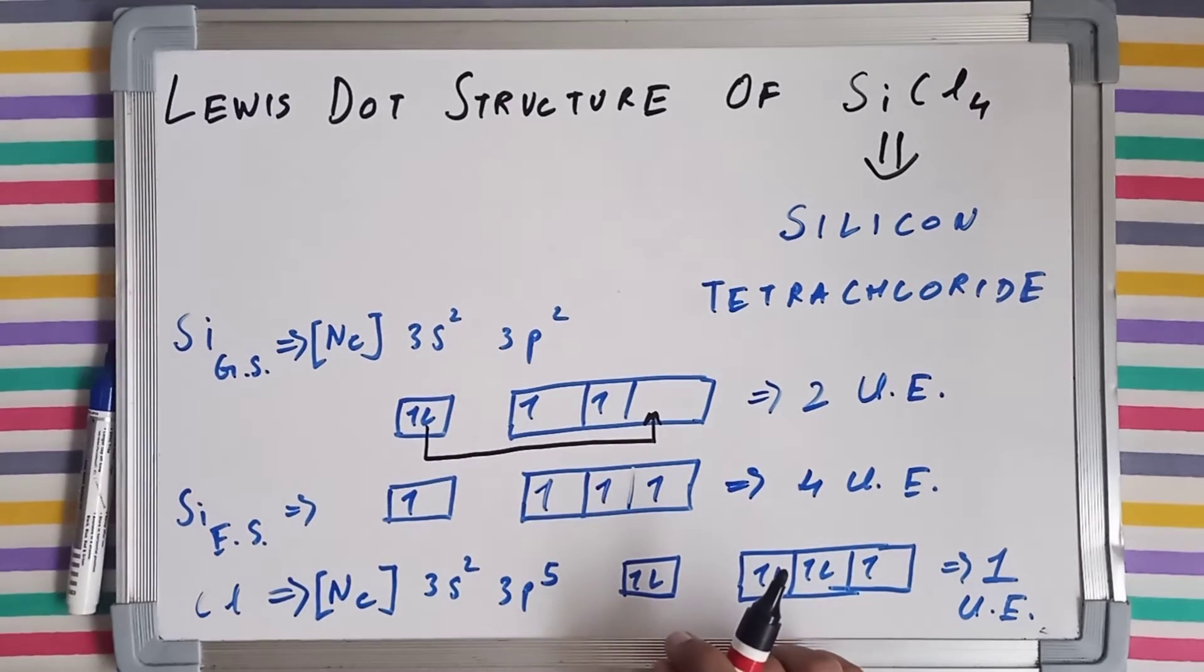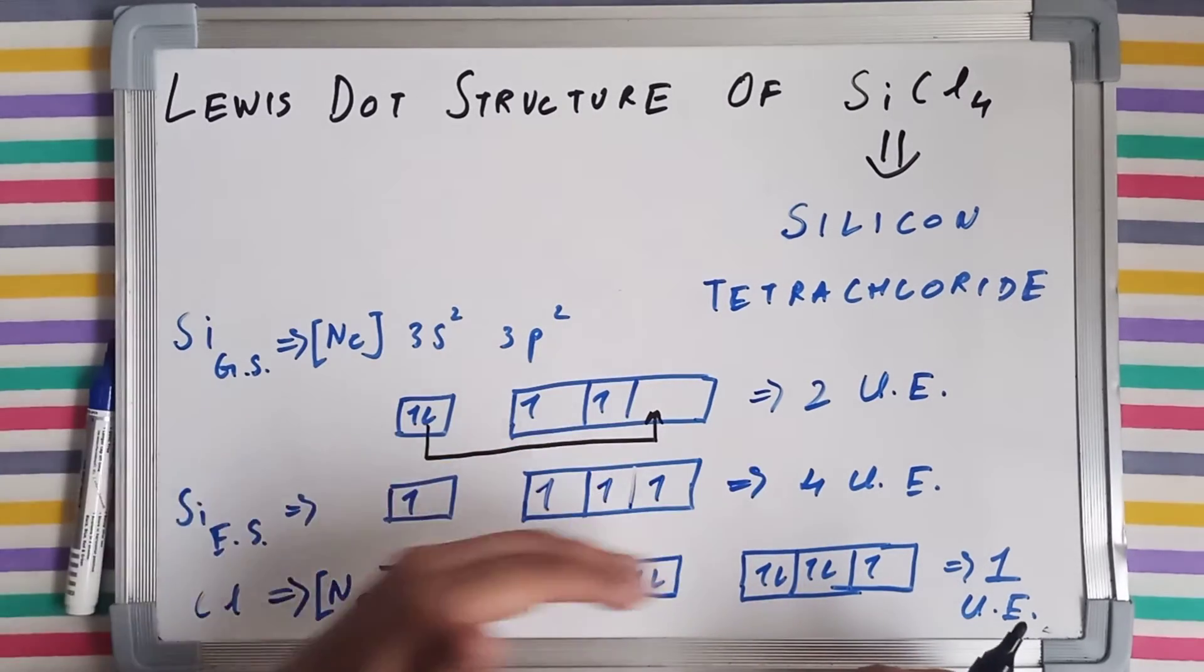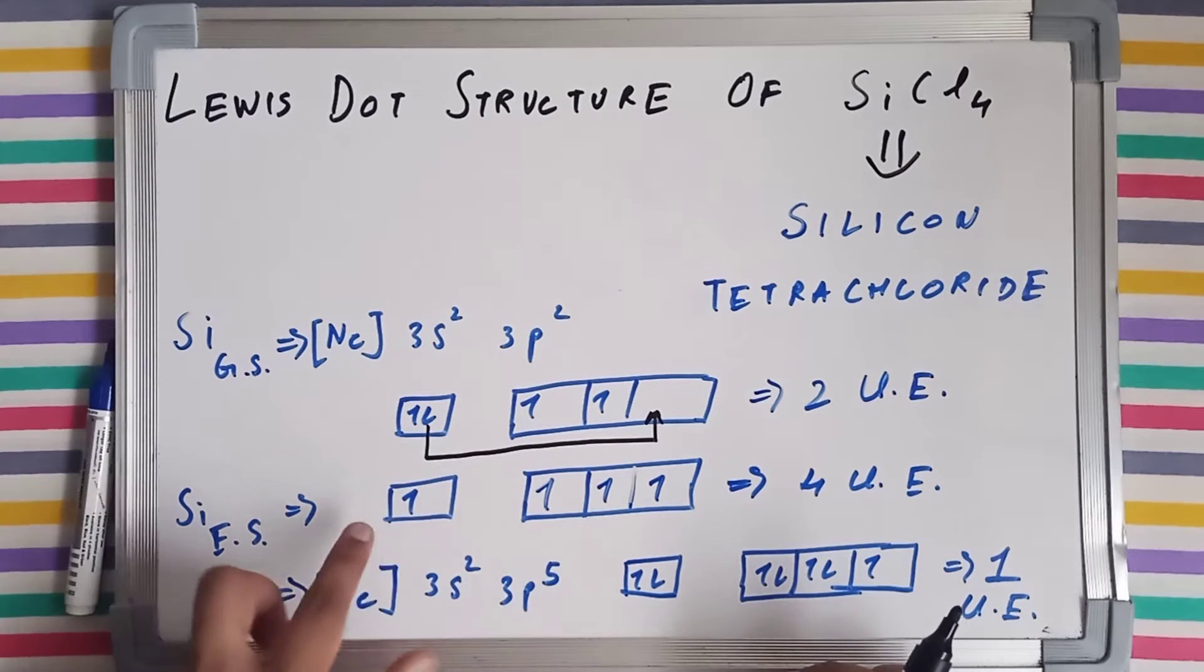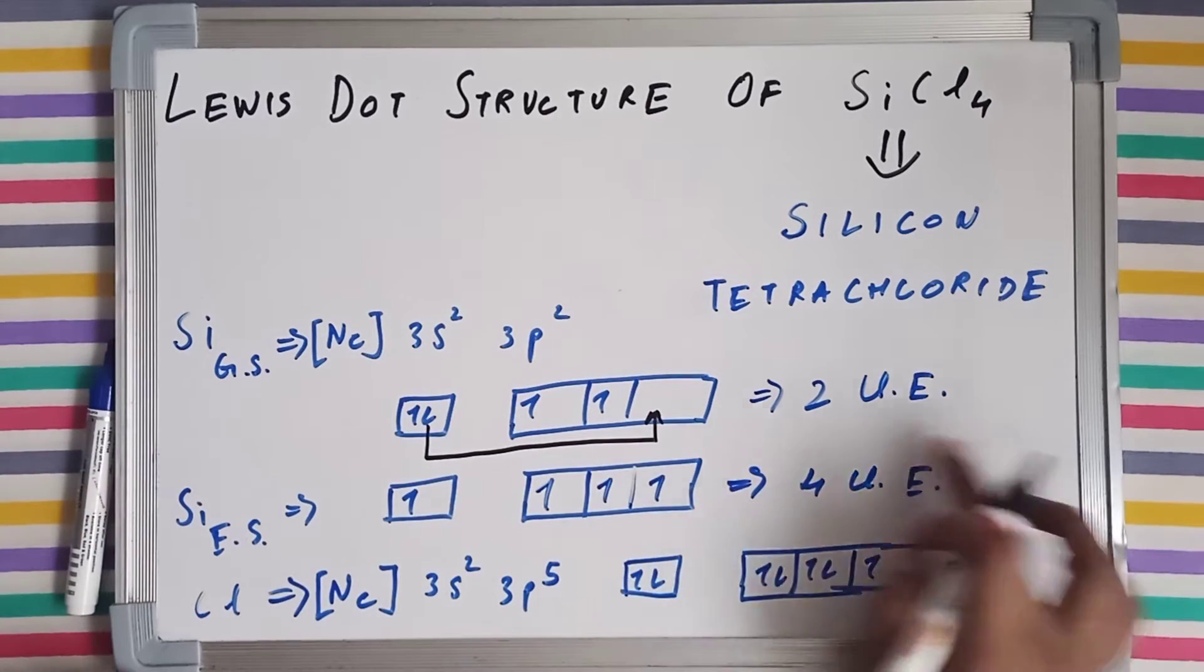Hence its orbital diagram goes something like this. Now see, notice every electron right now is unpaired. So right now in excited state we have got four unpaired electrons.